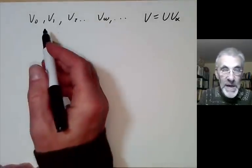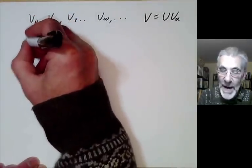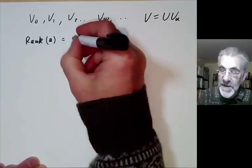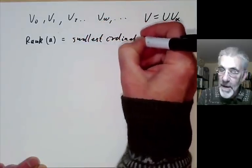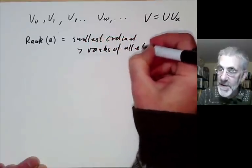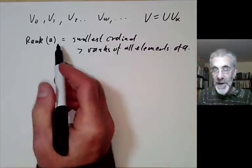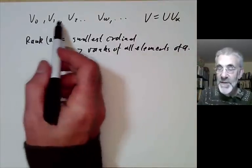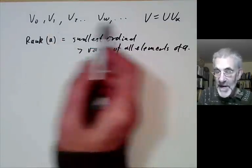In order to see this, the axiom of foundation can be used to show that all sets have a rank. The rank of a set A is the smallest ordinal greater than the ranks of all elements of A. The axiom of foundation implies the rank is well-defined, and the rank of A then turns out to be the smallest α such that A ∈ Vα.